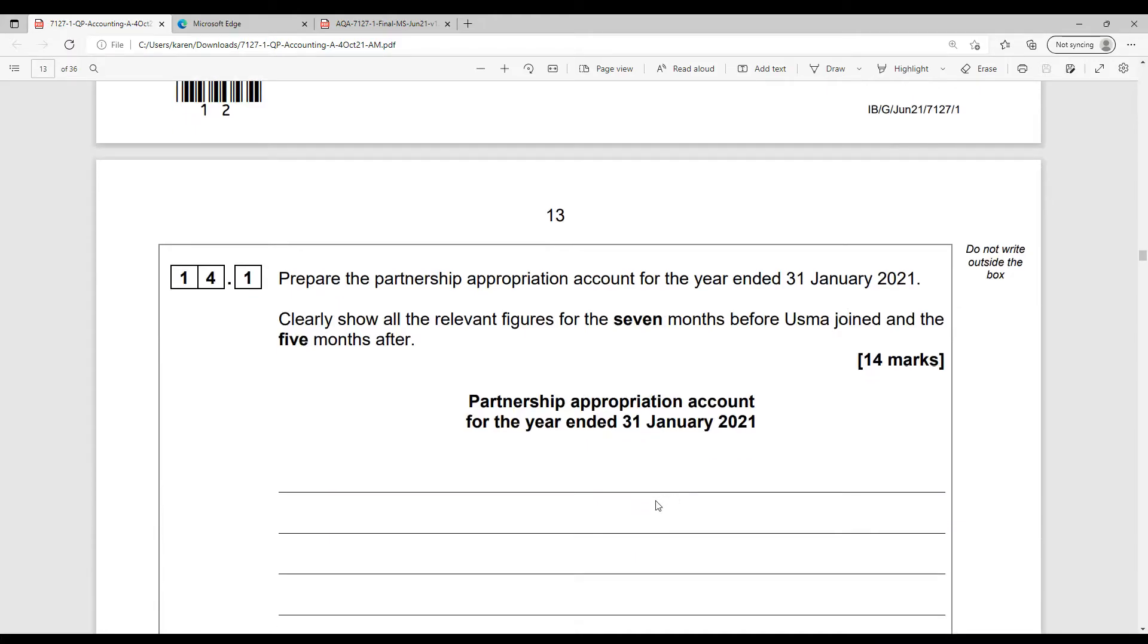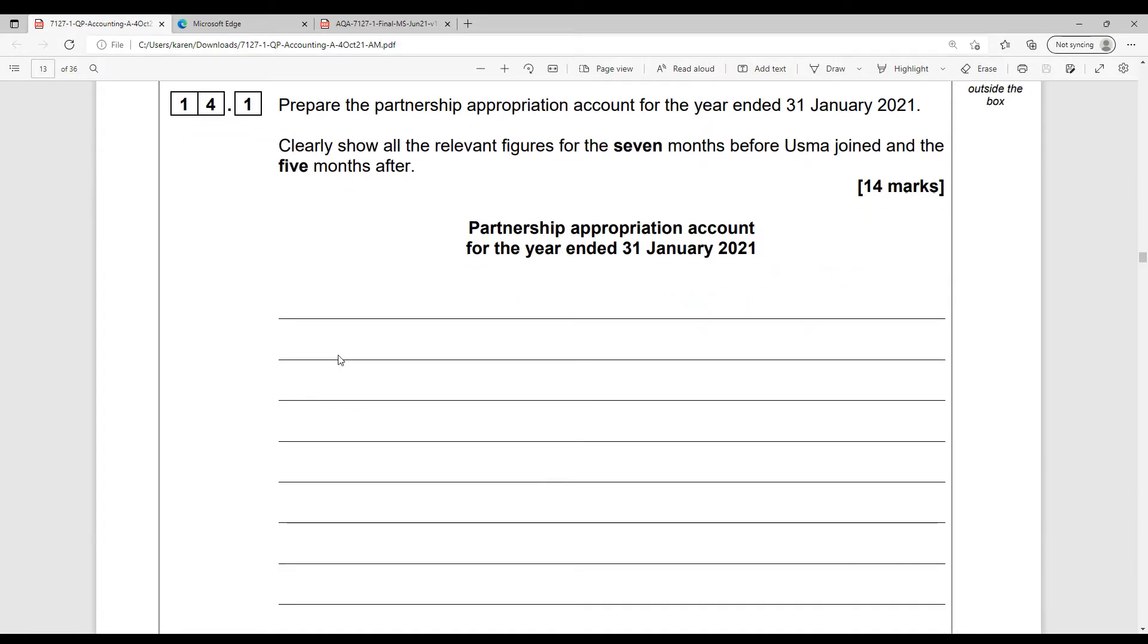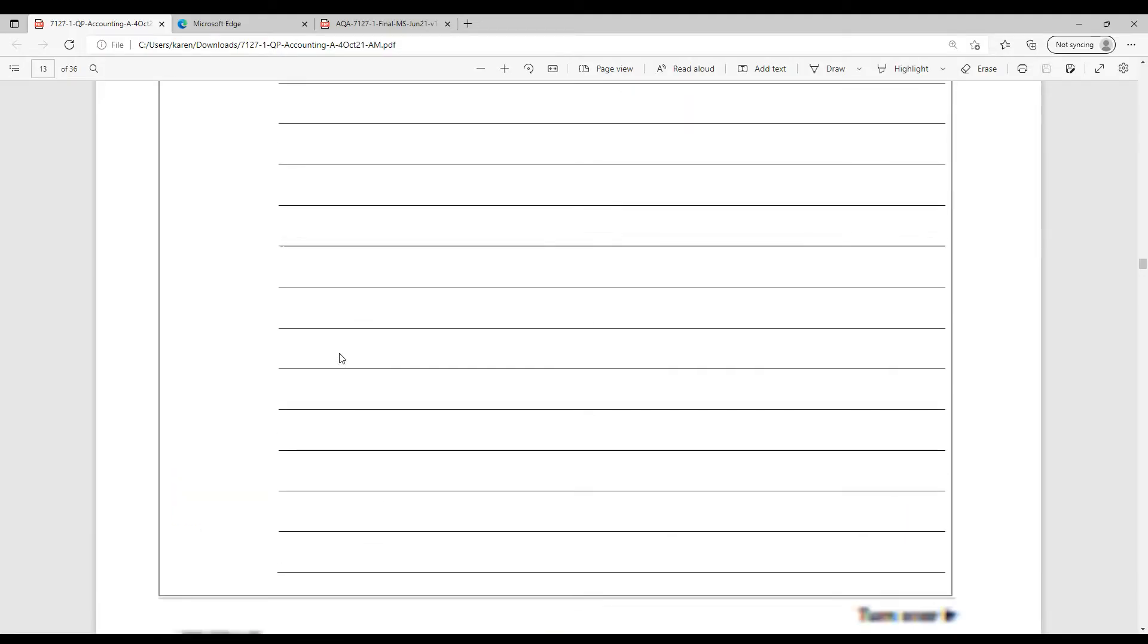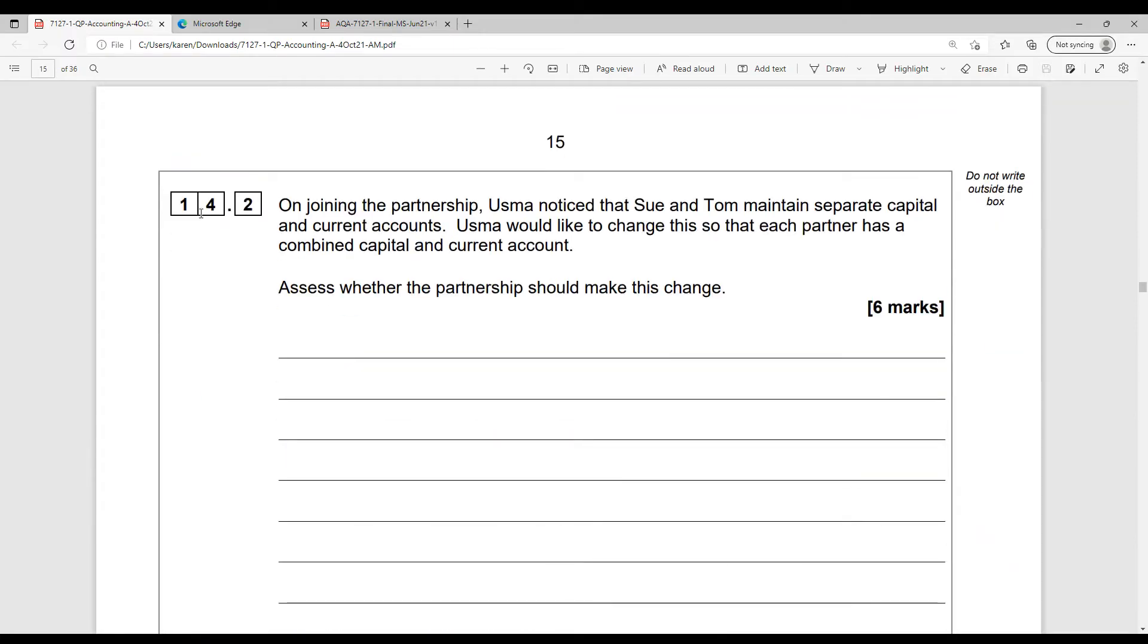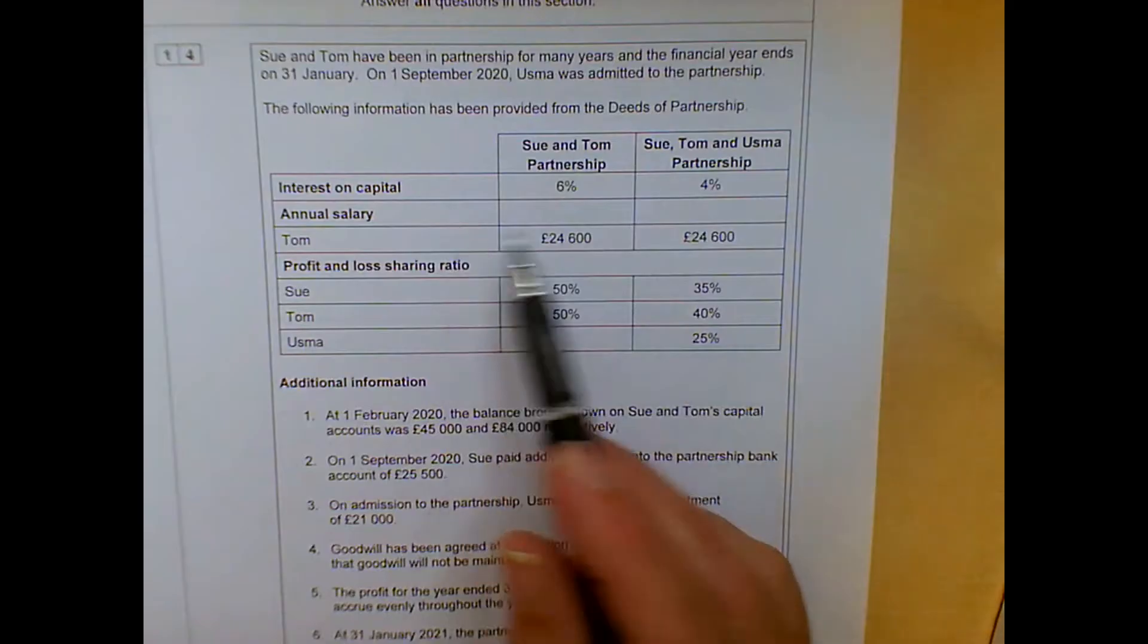And what we're asked to do, 14.1, is to prepare the appropriation account for 14 marks. And it says there, clearly show all the relevant figures for the seven months before Usma joined and the five months after. So clearly the examiner is keen to make sure that people apply the right split there. Then we've got 14.2 for another six marks. Remember, this is in Section B, so we've got 14 marks from computations and six marks from writing. And this one's asking you about the differences really between capital and current accounts. So I'm now going to switch over onto my little camera and work through the question for you.